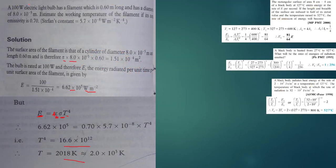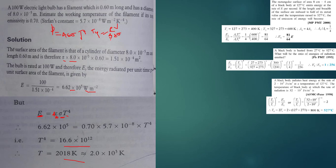We have a 100-watt electric bulb which has a filament 0.6 meters long and diameter of 8 × 10^-5 meters. Estimate the working temperature of the filament, given emissivity. It's just simple: Power = area × emissivity × Stefan's constant × T^4, so T^4 = Power / (area × emissivity × Stefan's constant). Power is 100 W. Surface area of the filament cylinder = πDH = π × (8 × 10^-5) × 0.6. Emissivity is 0.7, Stefan's constant is 5.7 × 10^-8. Put in the numbers, then take the fourth root to get the answer.